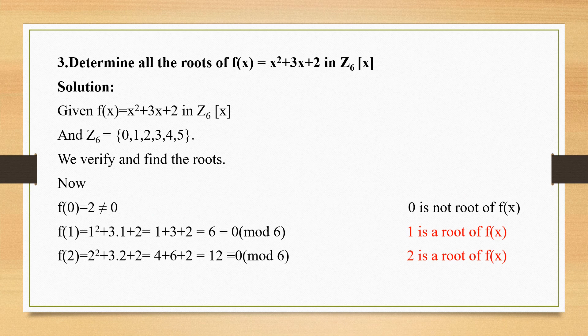Third problem: determine all the roots of f(x) in Z6. This procedure is quite different — in the previous problem there was no modulo set mentioned. Here, modulo set Z6 is mentioned, so I automatically write Z6 as {0, 1, 2, 3, 4, 5} — 6 numbers. I will choose only these numbers, substitute them one by one, and check whether the value I get has remainder 0. If it is 0, that number is a root of f(x); if not, it is not a root. You should use only numbers from the set.